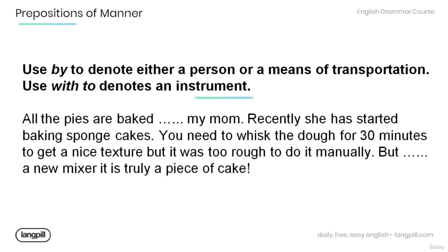We use 'by' to denote either a person or a means of transportation, and 'with' to denote an instrument. Fill in the blanks: 'All the pies are baked ___ my mom; recently she has started baking sponge cakes. You need to whisk the dough for 30 minutes to get a nice texture, but it was too rough to do it manually. But ___ a new mixer, it is truly a piece of cake.' Answer: 'by my mom... with a new mixer.'